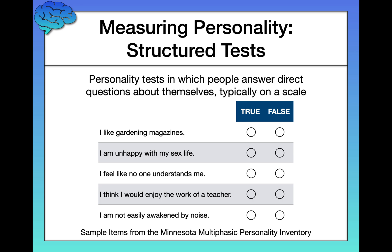This test takes about one to two hours to complete and it produces a clinical profile composed of 10 scales: hypochondriasis, depression, hysteria, psychopathic deviance, masculinity versus femininity, paranoia, psychoasthenia (which is sort of obsessive and compulsive qualities), schizophrenia, hypomania, and social introversion.